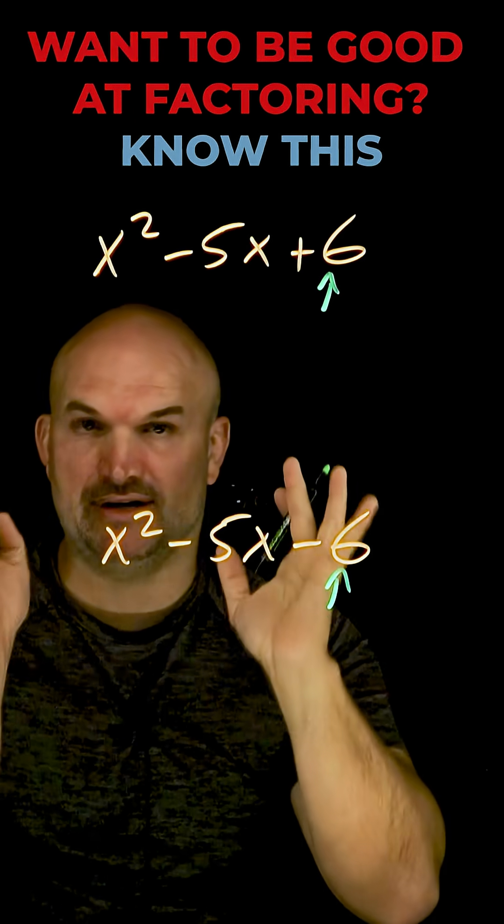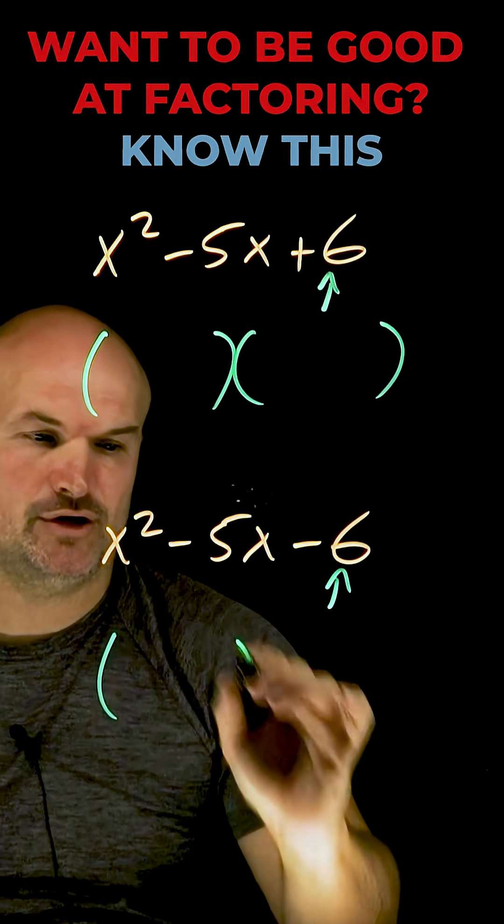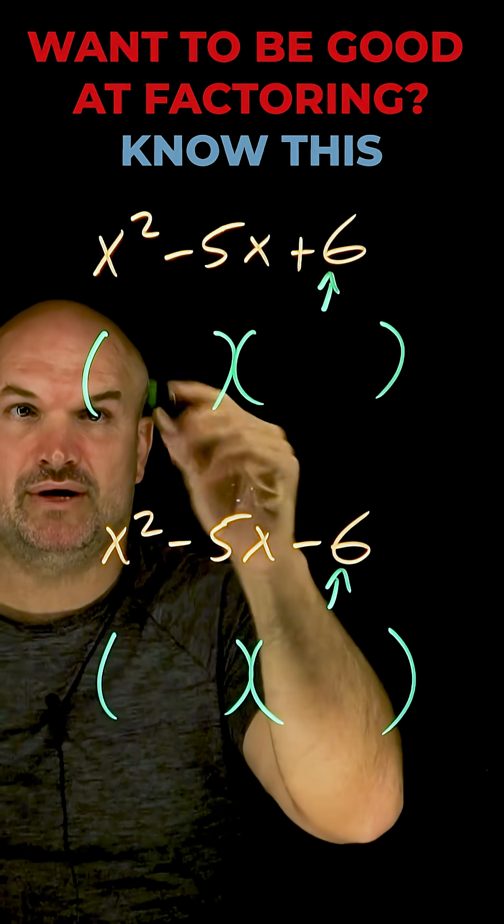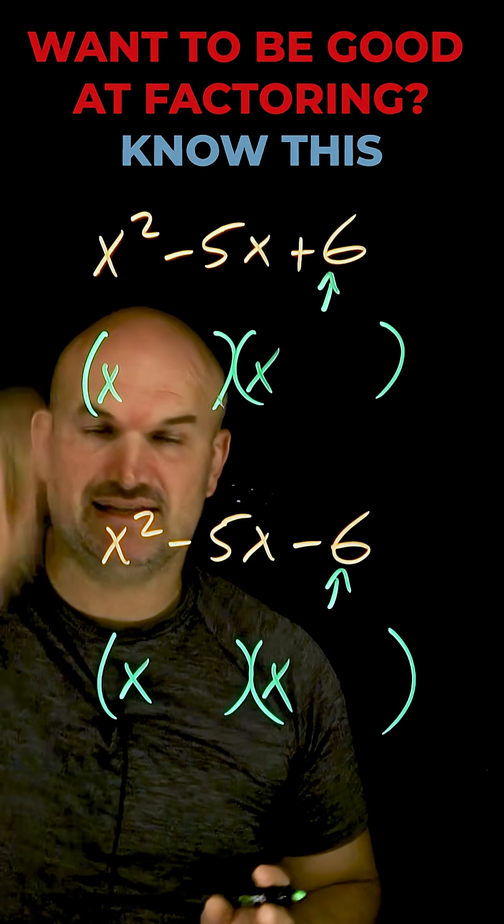When we're factoring a quadratic trinomial, those can be broken up into a product of two binomials. Our first two terms of our binomials always give us our first term of our trinomial, which in this case is easy. It's x and x, because x times x gives us x squared.